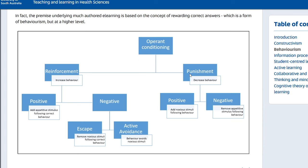Here's a chart of it. You can see there's reinforcement and punishment. Reinforcement increases behavior; punishment decreases behavior. When you're reinforced toward positive behavior, you get some kind of appetitive stimulus — like a gold star, positive praise, a higher grade. Or you reinforce negative things — you increase behavior by removing the noxious stimuli.